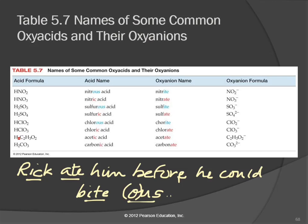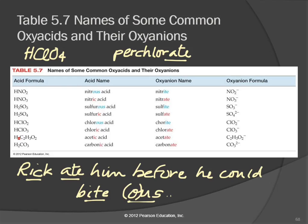For HClO₄: cover up the H, and that's perchlorate. Change '-ate' to '-ic' — perchloric acid. We're swapping the suffix: '-ite' becomes '-ous', '-ate' becomes '-ic', then add the word acid at the end. And no, you don't put 'hydro' in front for oxy acids — if you put 'hydro' in front, that signals it's a binary acid with no oxygen involved.